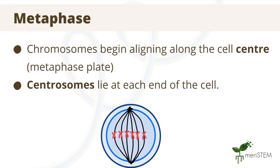During metaphase, chromosomes begin aligning along the cell middle, known as the metaphase plate. Centrosomes, which are organelles that hold the spindle fibres, lie at the end of the cell. And the spindles then reach out of these centrosomes and attach to the chromosomes that are aligned along the middle.